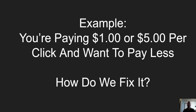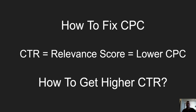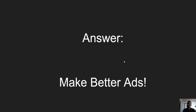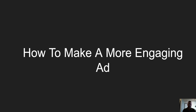Let's say you're paying a dollar or five bucks per click and you want to pay less — how do we fix it? If you've watched our other videos, you'll know that one of the things you need to look for is click-through rate and relevance score. Those go hand in hand. The better your click-through rate and relevance score, the lower your cost per click will get. So how do we get a higher CTR? Make better ads.